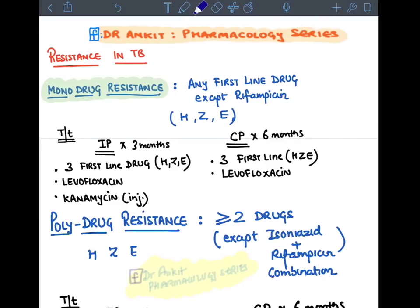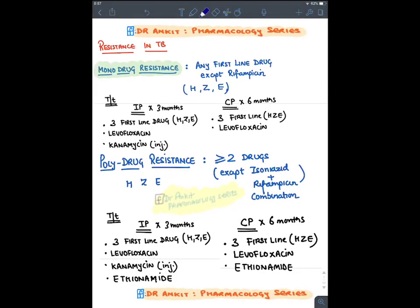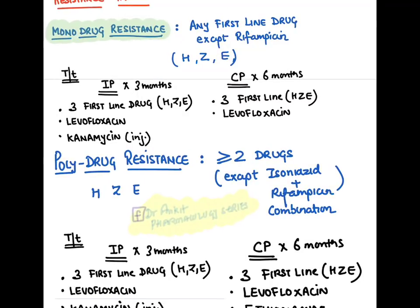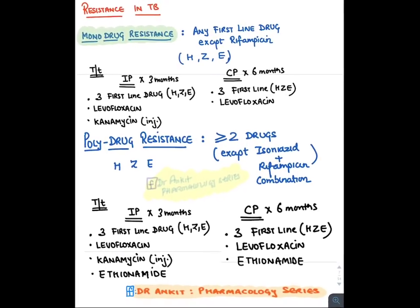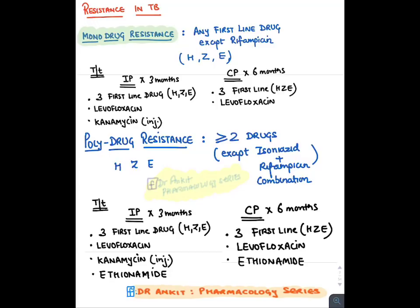Monodrug resistance means any first-line drug resistance except rifampicin — if rifampicin is involved, it is classified as multidrug resistance. For monodrug resistance, we continue the same drug but add levofloxacin and kanamycin in the intensive phase, and levofloxacin in the continuation phase. Total duration is 9 months. Polydrug resistance means resistance to more than two first-line drugs, but never the combination of isoniazid and rifampicin. Treatment is the same as monodrug resistance but with ethionamide added.